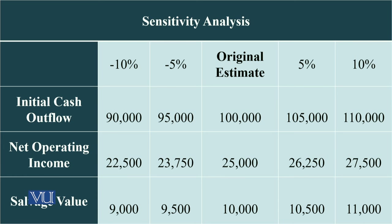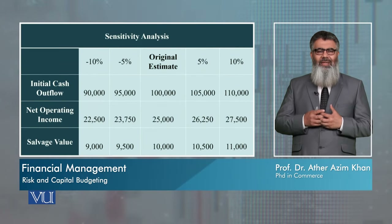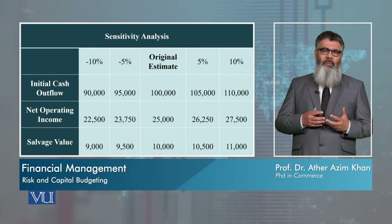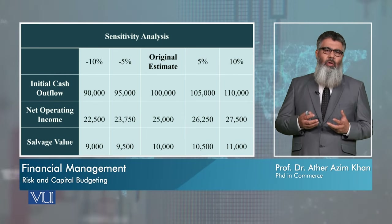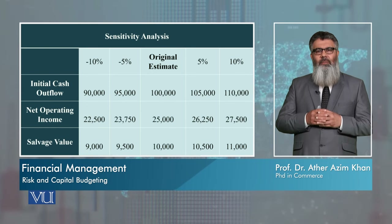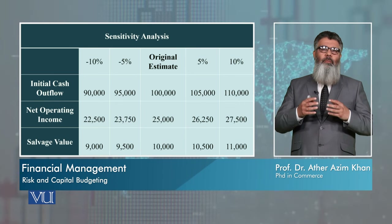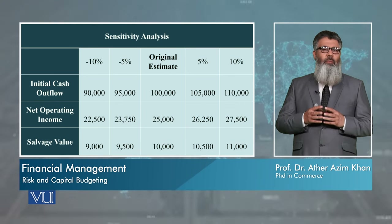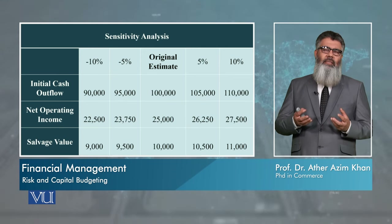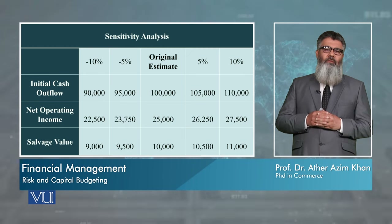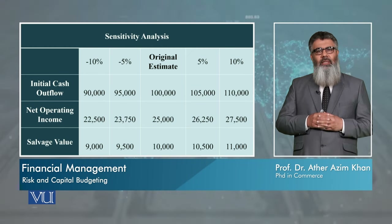When we see the original estimate, we see that the outflow required is 100,000. We see that the net operating income every year is 25,000 rupees. At the end of the project, the salvage value — also called scrap value, terminal value, or residual value — is the value at the end of the project. So in sensitivity analysis, we will see what happens when these values fluctuate.